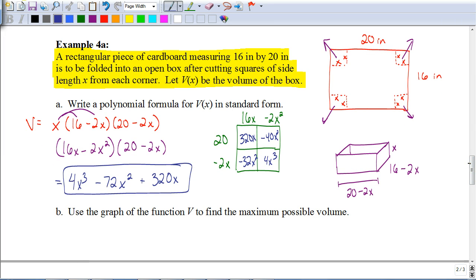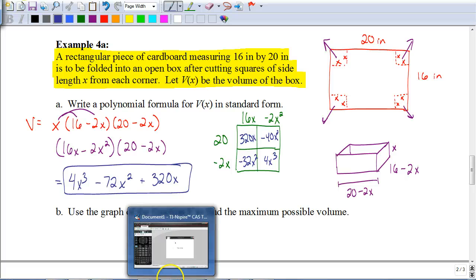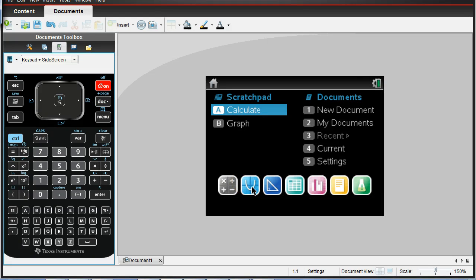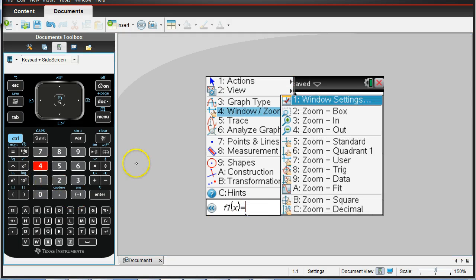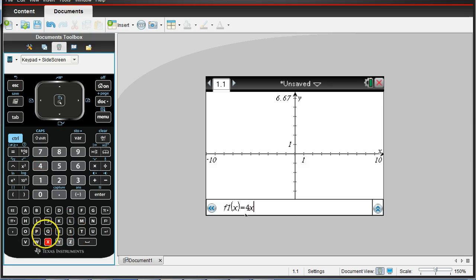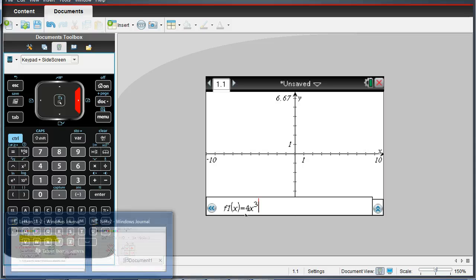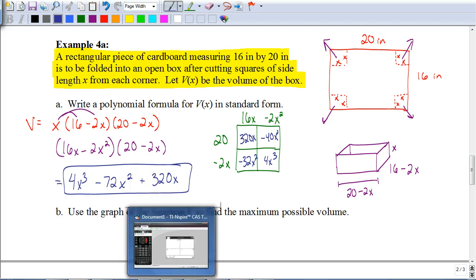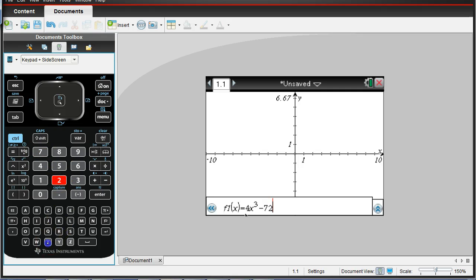Now, we want to figure out how to graph this, how we could use our graphing calculator to find the maximum possible volume. So if you have a graphing calculator, why don't you get that out. And we're going to graph this. So let's go to a graphing page. We're going to graph, it was 4x cubed. Now make sure that when you do the cube, like we've mentioned before, that you move the cursor back down to the bottom there. So it's 4x cubed. And then it was going to be minus 72x squared plus 320x. So minus 72x squared plus 320x. So when you hit enter, you're going to get a really weird looking graph.